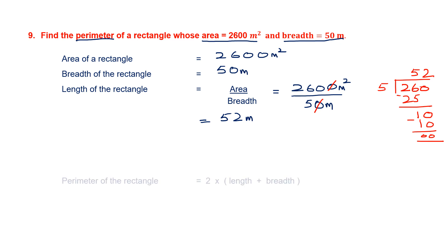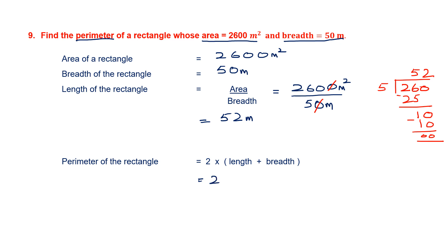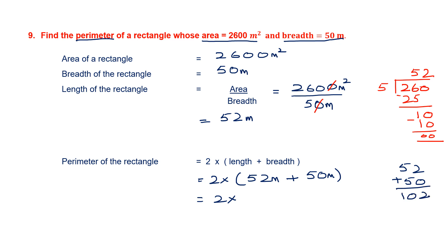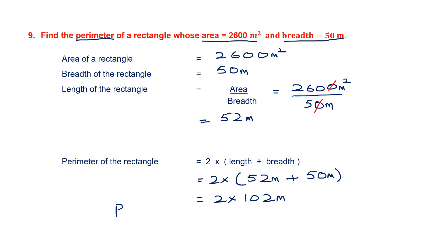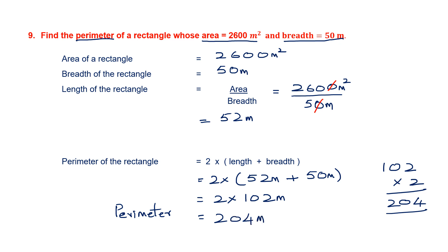Now we have the breadth and the length. We can find the perimeter with the formula 2 into length plus breadth. Length is 52 meters and breadth is 50 meters. That will be 2 into 52 plus 50. Let's add: 52 plus 50 — 2, then 5 plus 5 is 10, giving 102. So 2 into 102 meters. 2 twos are 4, 2 zeros are 0, 2 ones are 2 — so 204 meters. The perimeter of the rectangle is 204 meters.